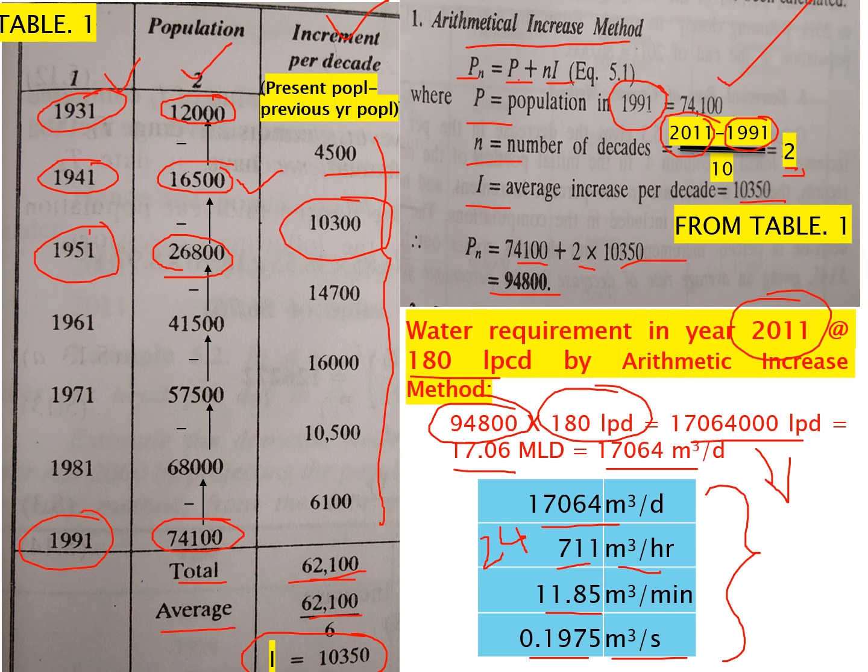This is how you can predict future population using the simple equation Pn = P + n×i by the Arithmetical Increase Method. Thank you very much — if you have liked this video, please like, comment, and share with other students. Thank you.